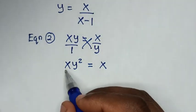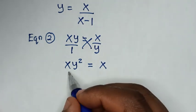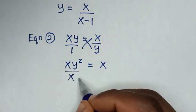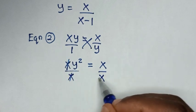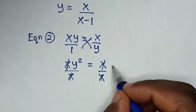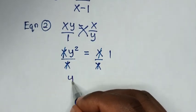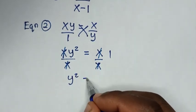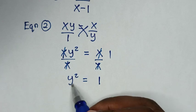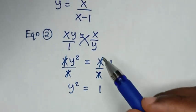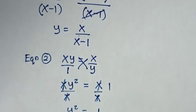From here, x is on both sides, so we divide by x on both sides, and they cancel, leaving y squared equal to 1. Now we substitute the value of y, which is x over (x minus 1), into this equation.